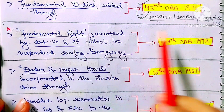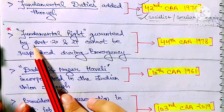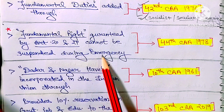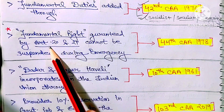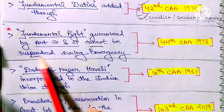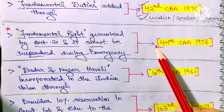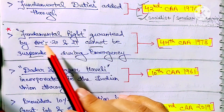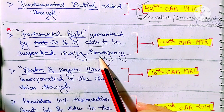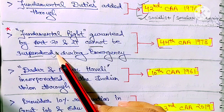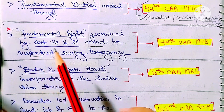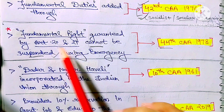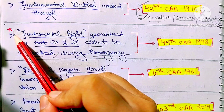Next: through the 44th Constitution Amendment Act 1978, the Fundamental Rights guaranteed by Articles 20 and 21 cannot be suspended during Emergency. This is a very important point — many people get confused between Article 19 and 20, but it is Articles 20 and 21 that cannot be suspended during Emergency.